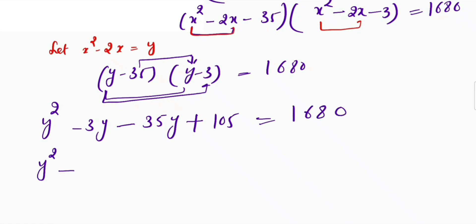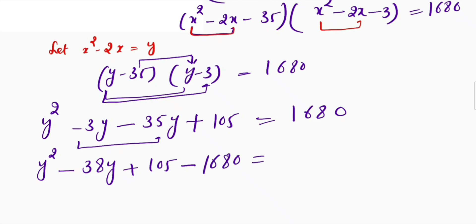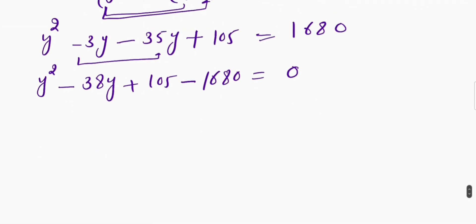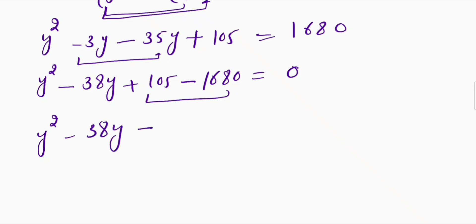This becomes y squared minus 38y plus 105. Since these are like terms we can add them to get negative 38y. I will take 1680 to the left-hand side, so 1680 comes equal to 0. After subtracting I get y squared minus 38y minus 1575, which is equal to 0.